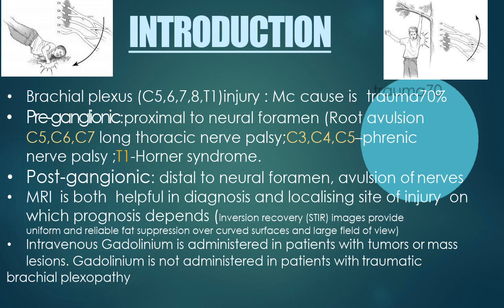Here comes the role of radiology. MRI is the best modality for diagnosing and localizing the site of injury in brachial plexopathy, because localization — whether preganglionic or postganglionic — determines prognosis and management. Out of all MRI sequences, the STIR (short tau inversion recovery) sequence is the best for diagnosis and localization. Intravenous gadolinium is administered in patients with brachial plexopathy due to tumors and masses, but is not generally administered in traumatic cases.